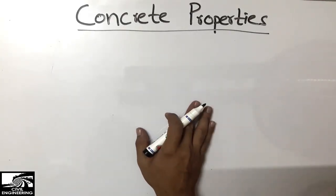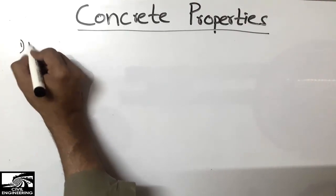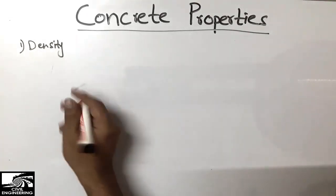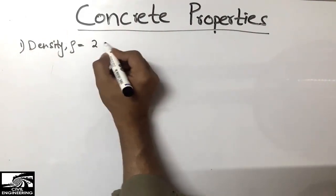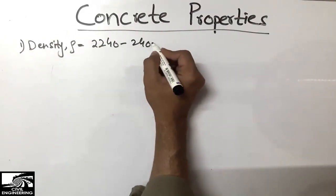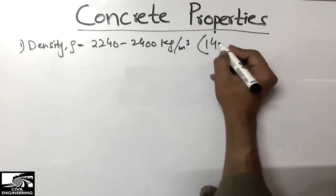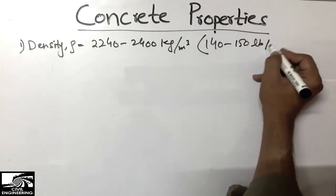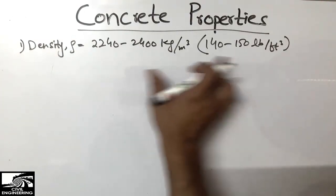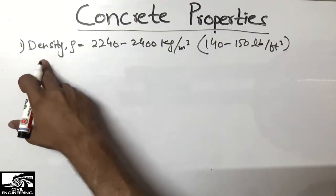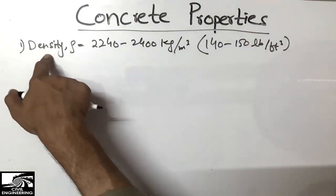Starting from the first property of concrete: density. The density of concrete ranges from 2200 to 2400 kilogram per cubic meter, or we can say 140 to 150 pound per cubic foot. This is the density range of concrete, and it's really important to find the self-weight of the concrete member.